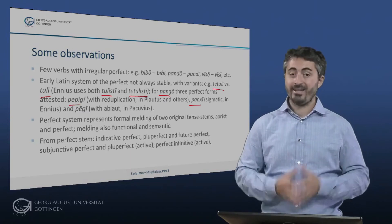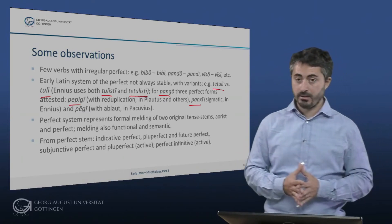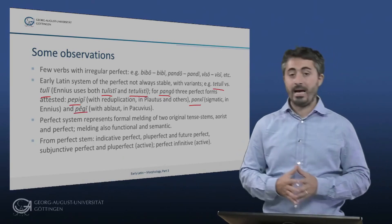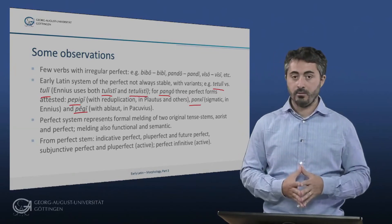Panxi, with sigmatic perfect, used by Ennius, and then Pegi, with ablaut, found in Pacuvius.